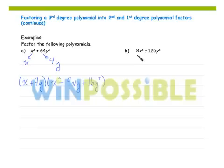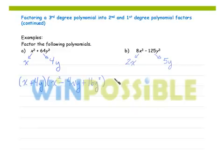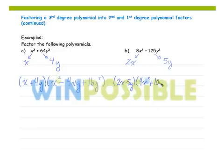In my second example, I have the difference of two cubes. The cube root of my first term is 2x, and the cube root of my second term is 5y. Since it's subtraction, my first set of parentheses is going to have subtraction: 2x minus 5y, times the quantity of the square of my first, 4x squared, plus first times last, 10xy, plus the square of my last, 25y squared.